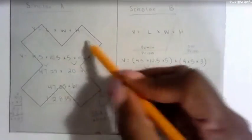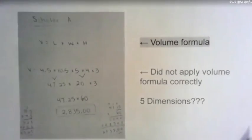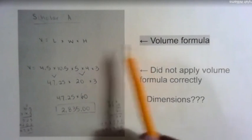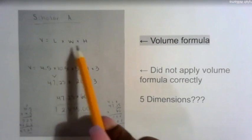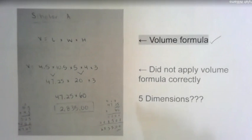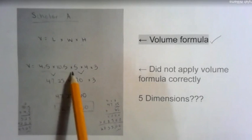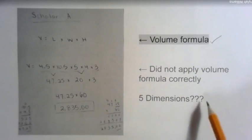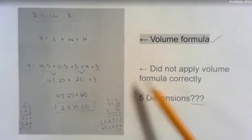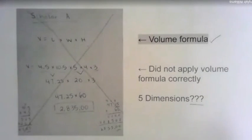If you agreed with scholar B then you are correct. Scholar A was incorrect and we're going to take a closer look at both pieces of work to find out why. When we look at what scholar A did, we see here that they first wrote the volume formula: length times width times height equals volume. That's good. That's correct. But it doesn't look like they applied that formula. It looks like they have one, two, three, four, five dimensions when the formula for volume is only three. So it doesn't look like they actually applied the formula they wrote to begin with, which is why we could say that scholar A's work was incorrect.